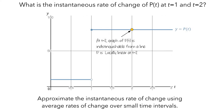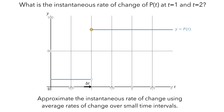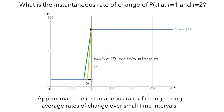Another way to say this is that p is locally linear at t equals 2 months. At t equals 1 month, if p had a constant rate of change over a small interval, that rate would be represented by the slope of a line. But no matter how small we make delta t, the graph of p of t is not similar to any such line. This jump in the values of p at t equals 1 month means that p is not locally linear at t equals 1 month, and this explains why we could approximate the instantaneous rate of change at t equals 2 months but not at t equals 1 month.